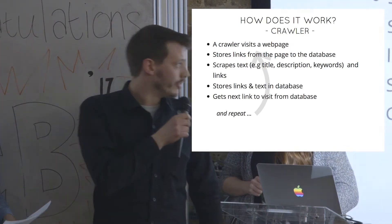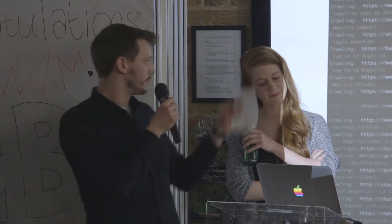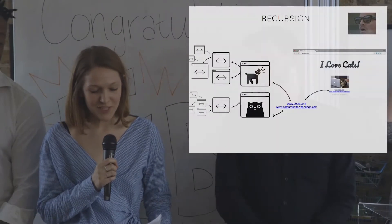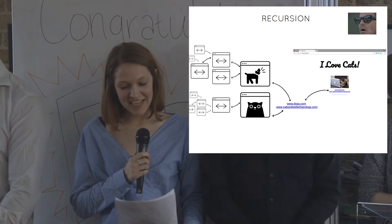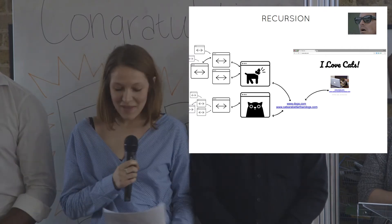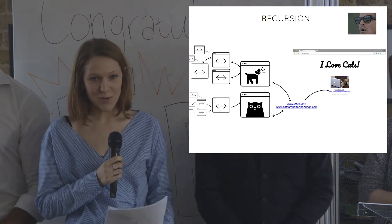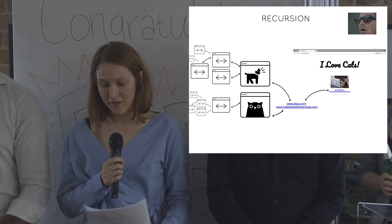And now we have a demo of our crawler being kicked off. We start the program and it crawls the internet, printing off the websites. As a visualization of this process, here is cats.com, which has two links. When the crawler finds these links, it follows them to dogs.com and catsarebetterthandogs.com. From here, it follows their links and so on. This process is called recursion, in which each step is the forebearer of the subsequent steps.